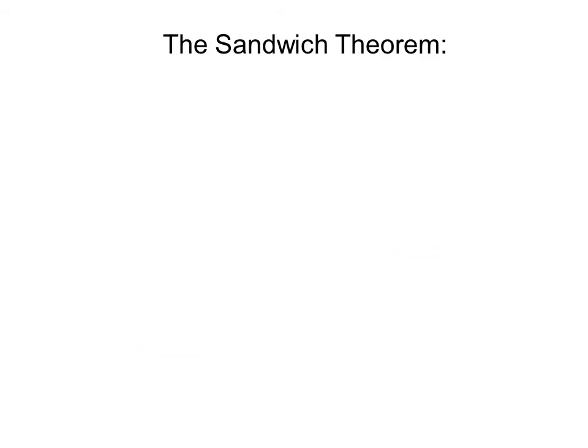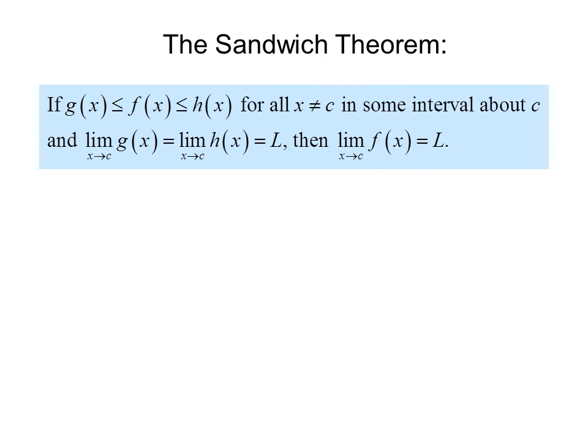The Sandwich Theorem: if g of x is less than or equal to f of x, which is less than or equal to h of x for all x not equal to c in some interval about c, and the limit as x approaches c of g of x equals the limit as x approaches c of h of x equals L, then the limit as x approaches c of f of x equals L. The key idea is that f of x is always between g of x and h of x, so if the limits of g and h approach the same value, f of x is stuck in the middle.